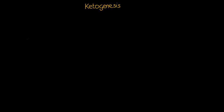Ketogenesis is a process by which fatty acids are transformed into ketones, such as acetoacetate, 3-hydroxybutyrate, and acetone.